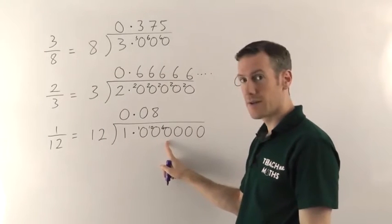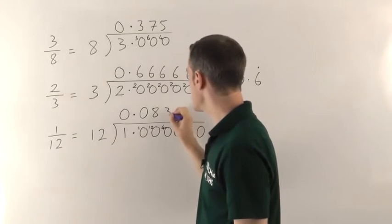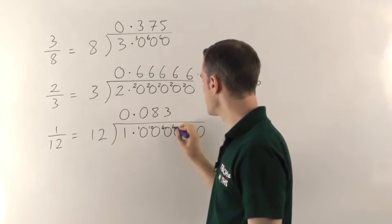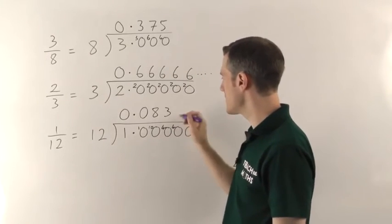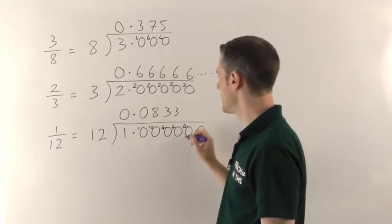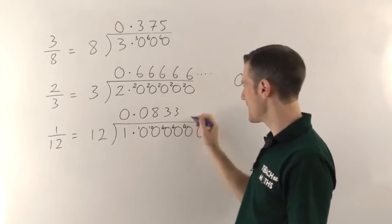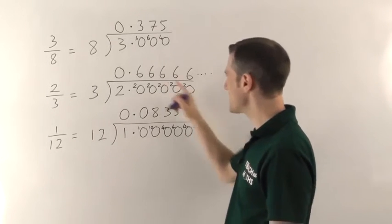So then it's 12s into 40. That's going to go 3 times. 3 12s are 36 remainder 4. 12s into 40 go 3 times remainder 4. Hang on a second. We've seen this before. 3 times remainder 4. It's just like this one.